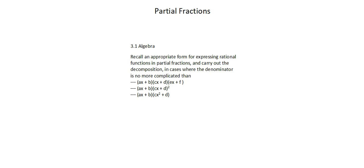Two: a repeated linear factor — the second scenario given — which I'll read as ax plus b times cx plus d times cx plus d, or cx plus d squared as written. And the third scenario involves a quadratic factor: ax plus b times cx squared plus d.